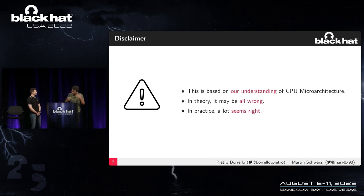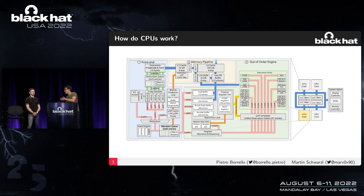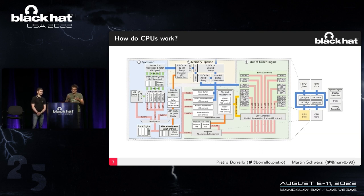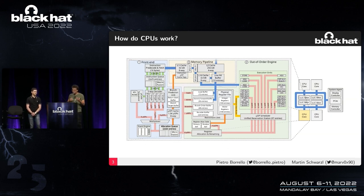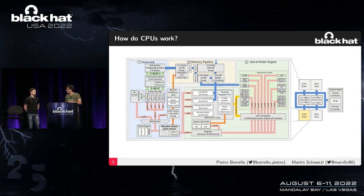Before the deep dive, let's look at a high-level view of how CPUs work. At university most people learn the fetch, decode, execute, writeback steps. There's a front end doing the fetch and decode stage, an out-of-order engine, and a memory subsystem in between that speeds things up using caches.